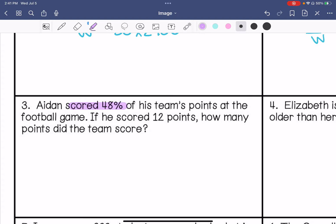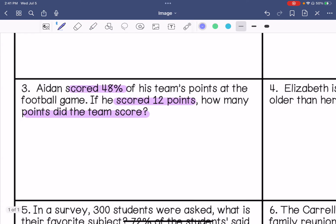Aiden scored 48% of his team's points at the football game. If he scored 12 points, how many points did his team score? So we know that he scored 12. We don't know our whole. We know that the 12 was 48%, so we know that 48 divided by 4 is 12. So what's 100 divided by 4? That is 25. So they scored a total of 25 points.